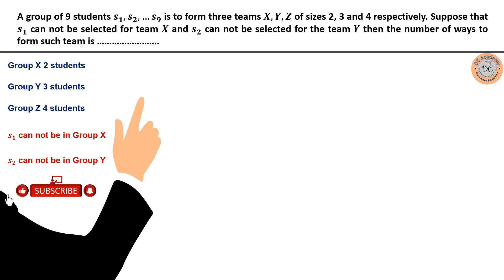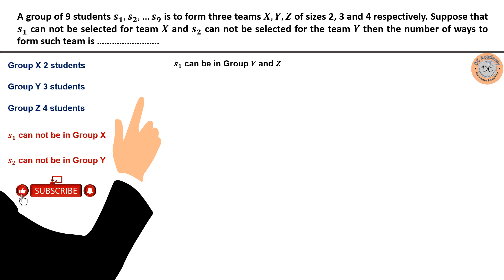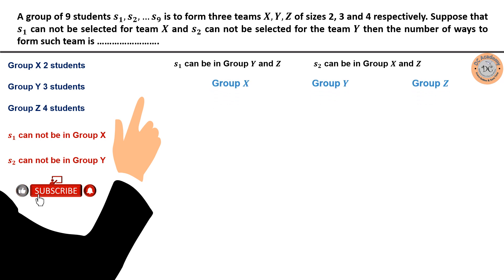Since S1 cannot be in group X, S1 can be placed in group Y or group Z. Since S2 cannot be in group Y, S2 can be placed in group X or group Z. We now enumerate the different possibilities for placing S1 and S2.